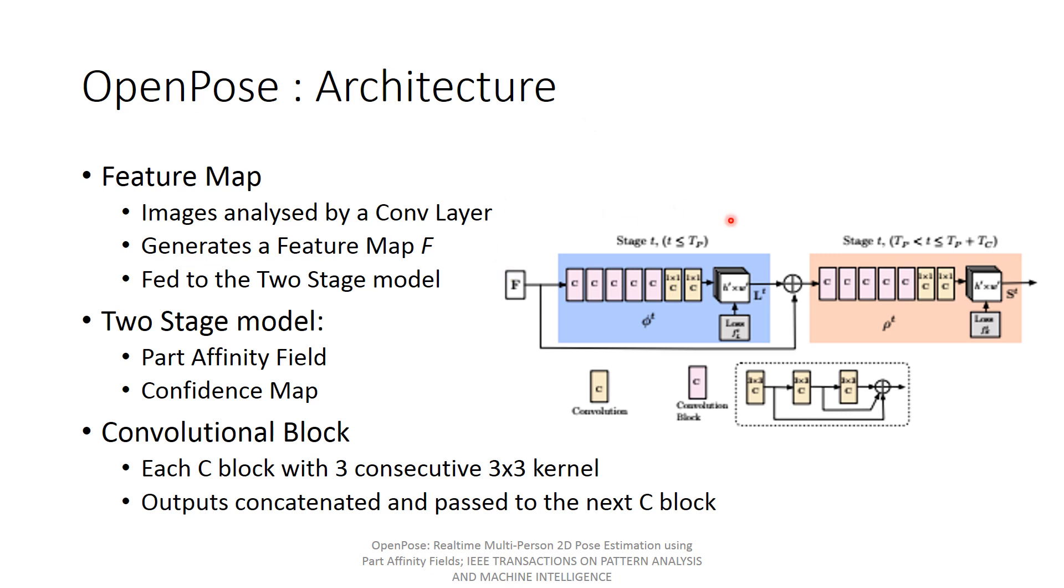The two-stage model consists of the first stage which will have a part-affinity field and the second stage will produce a confidence map. It is similar to a convolution layer with consecutive convolution blocks. Here, each convolution block will consist of three consecutive 3x3 kernels. The outputs are then concatenated and fed to the next convolution block.